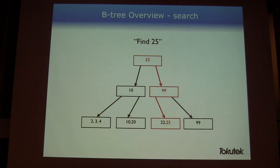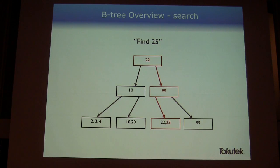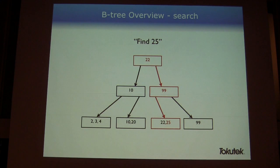How this relates to databases: you put things in, delete things, mutate them with updates, or do a lot of searching. If we want to find the value 25, the path we take is highlighted in red. Starting at the root, 25 is greater than 22 so we go right, it's less than 99 so we go to that left pointer. We land in a leaf node with values 22 and 25, and we find 25 is there. Even a less-experienced programmer would find this relatively performant.